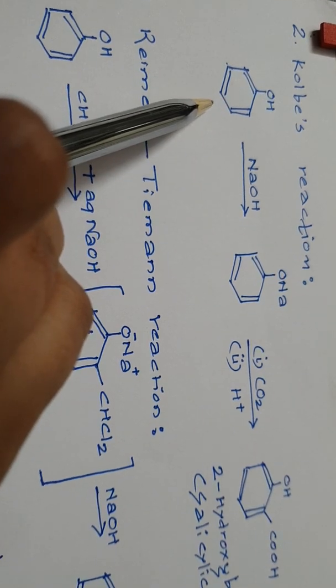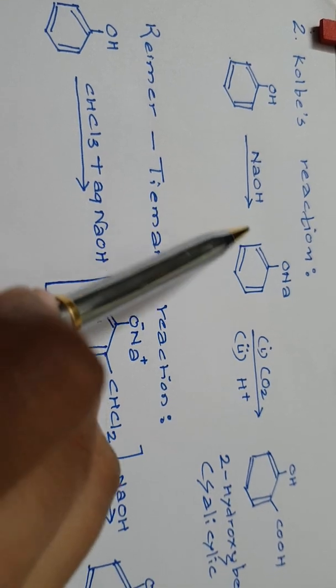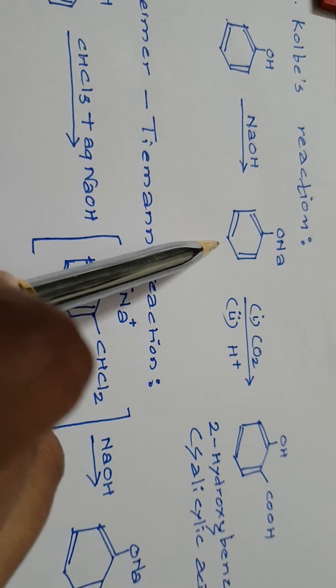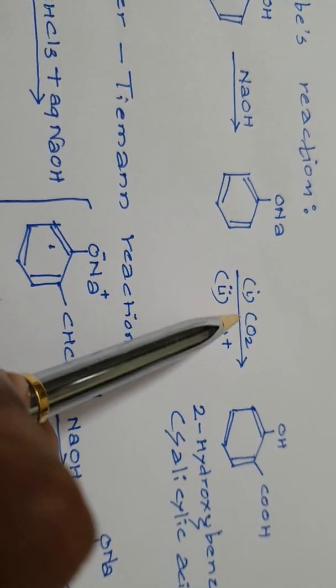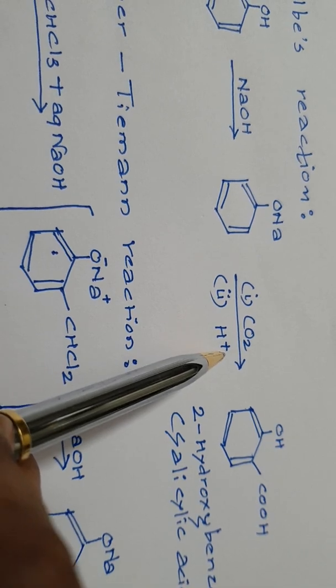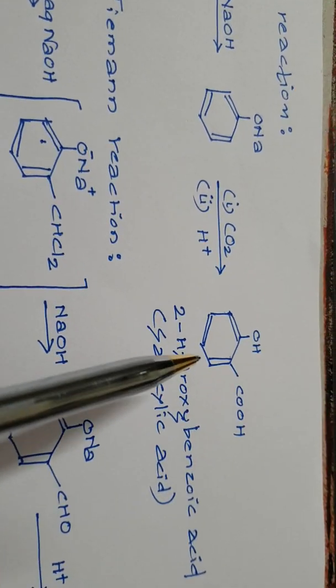In this we have phenol which is made to react with a base. On reaction with a base it gives us sodium phenoxide. Sodium phenoxide further is made to react with dry ice, that is carbon dioxide, followed by a treatment with acid. What we obtain is 2-hydroxybenzoic acid which is nothing but salicylic acid.